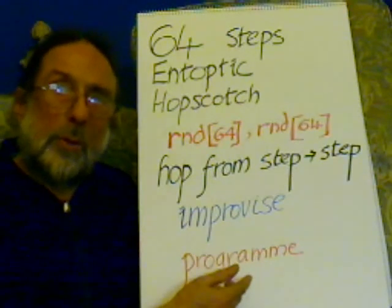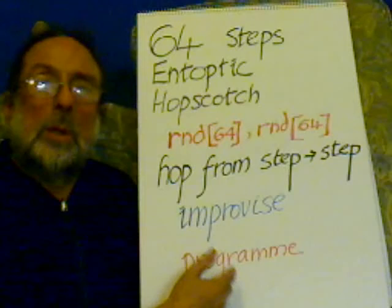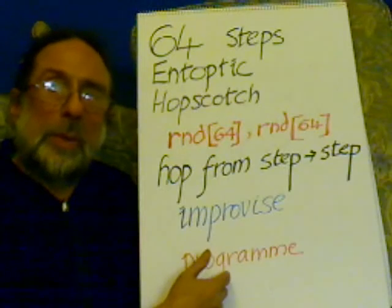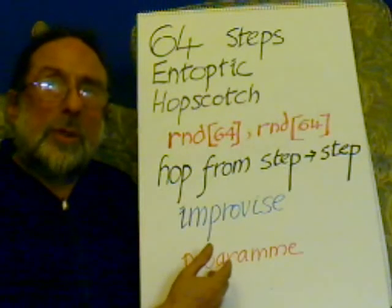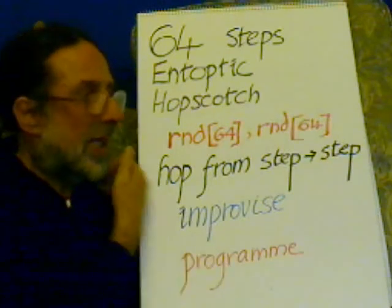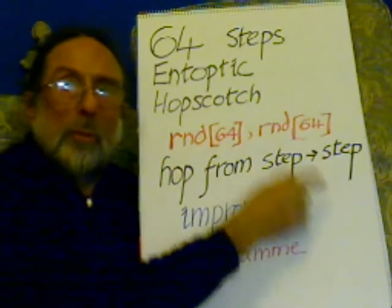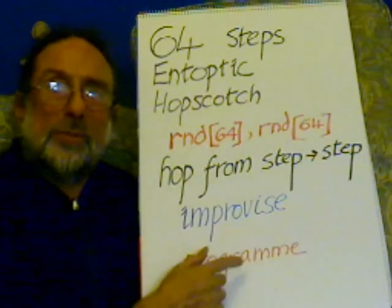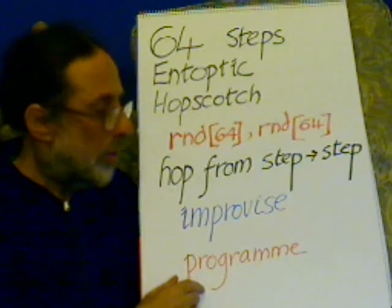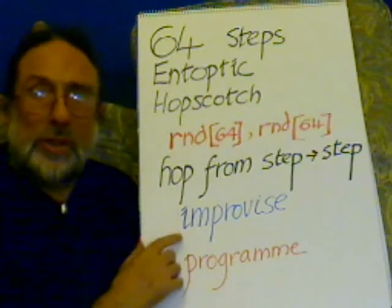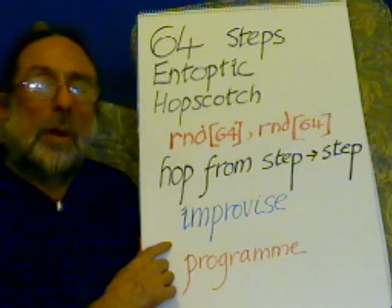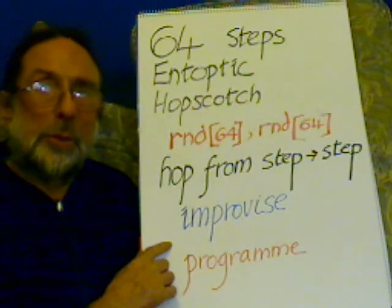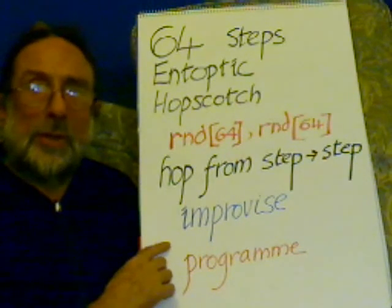We think of something, we go for a walk, we see something, we pick it up. We assume that one function determines another function. So the game is to hop from one function to another function, from 64 to 64. And that's the basics of the programming, the basis of the improvisation for the drama schools, and the basis of a narrative.